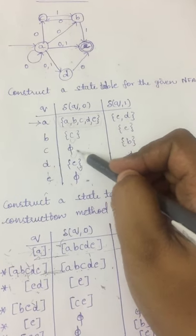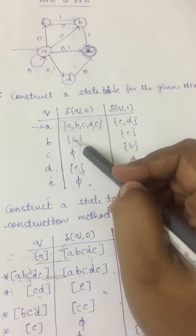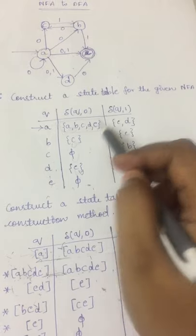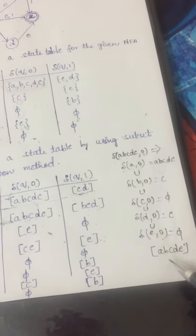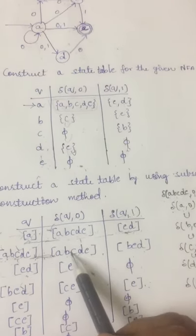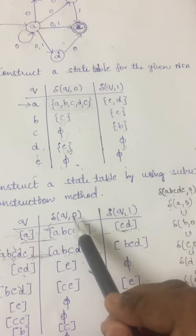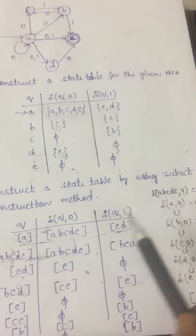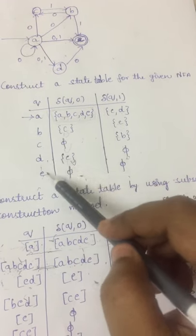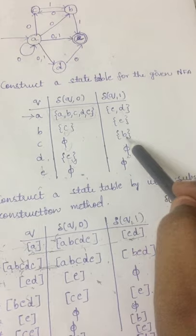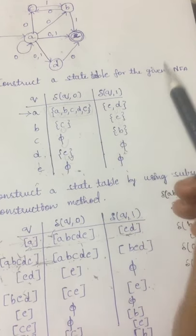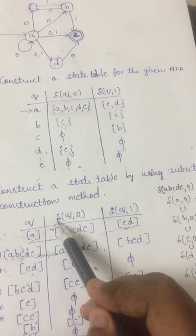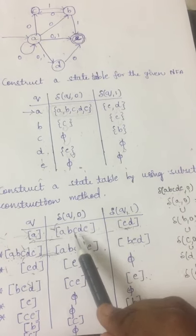By taking the union operation, we get the output A, B, C, D, E. C is already present, and E is already present, so we need not repeat them. The output for state ABCDE under input symbol 0 is A, B, C, D, E. Similarly, we have to fill for the input symbol 1 for state ABCDE. We perform the union operation and write the result. In this way we constructed the transition functions and filled the state table for state ABCDE.